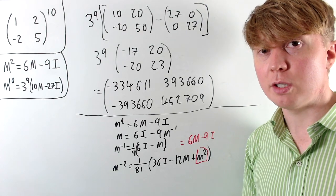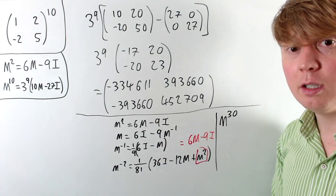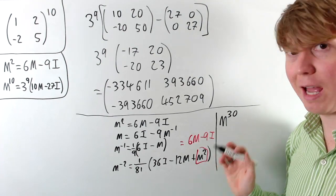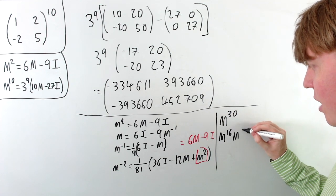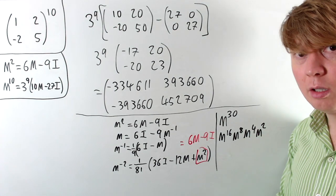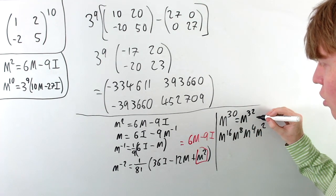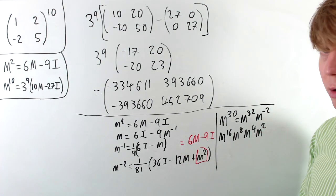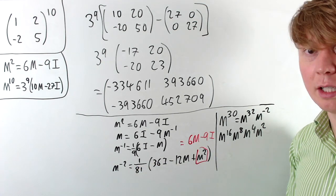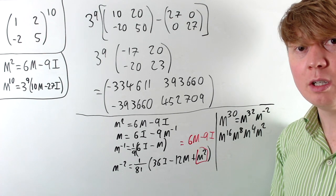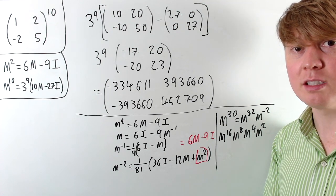There's an interesting case where you can combine positive and negative powers. Instead of M to the 10, imagine calculating M to the 30. Using repeated doubling, you'd need M squared, M to the 4, M to the 8, M to the 16, and then combine M to the 16 times M to the 8 times M to the 4 times M squared — quite complicated. It's simpler to write M to the 30 as M to the 32 times M to the negative 2, combining the repeated doubling approach with the Cayley-Hamilton negative power formula. Even though this matrix isn't diagonalizable, there's still a lot we can do to make raising it to a large power much easier.